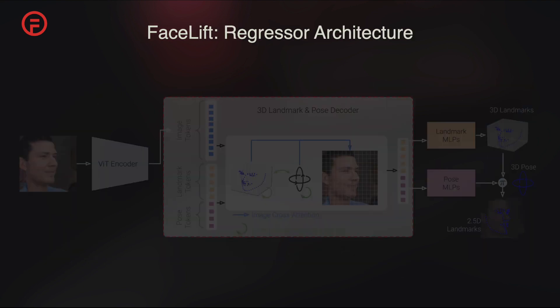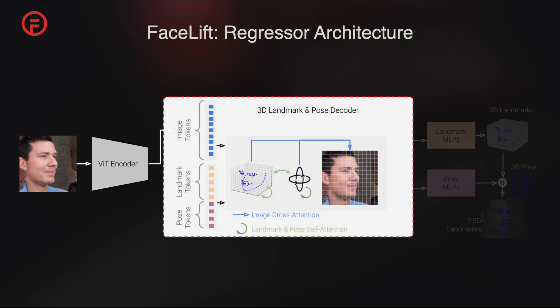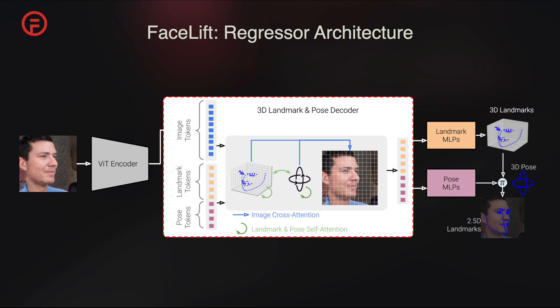Our architecture involves passing the image through a ViT encoder, which is then passed into a decoder that processes image tokens along with learned landmark and pose tokens. In each decoder block, landmark and pose tokens cross-attend to the image tokens, as well as self-attend amongst the landmark and pose token set. Finally, landmark and pose tokens pass through MLPs, and the 3D landmarks and the pose are predicted and projected to obtain the 2.5D landmarks.